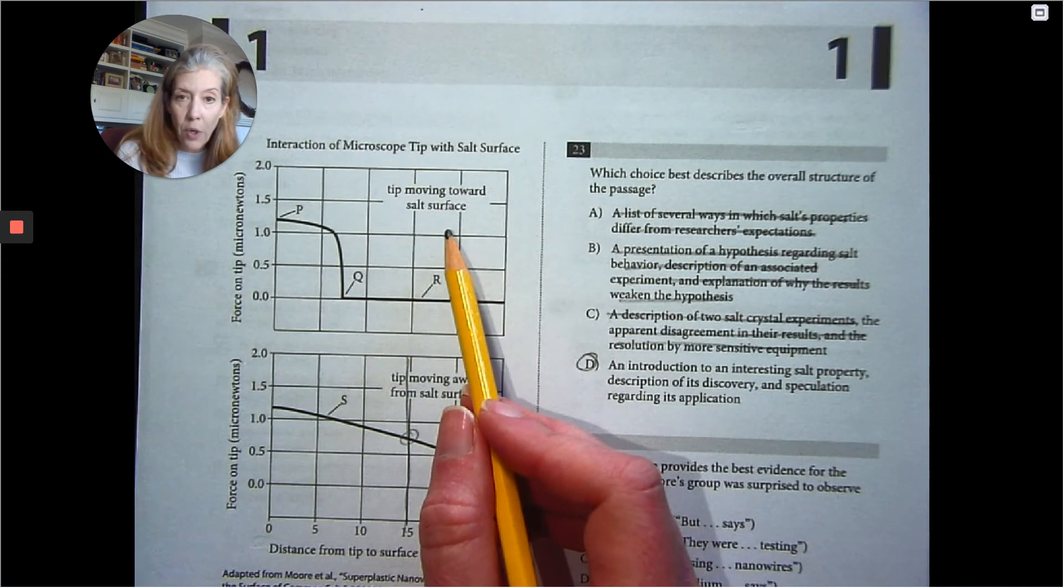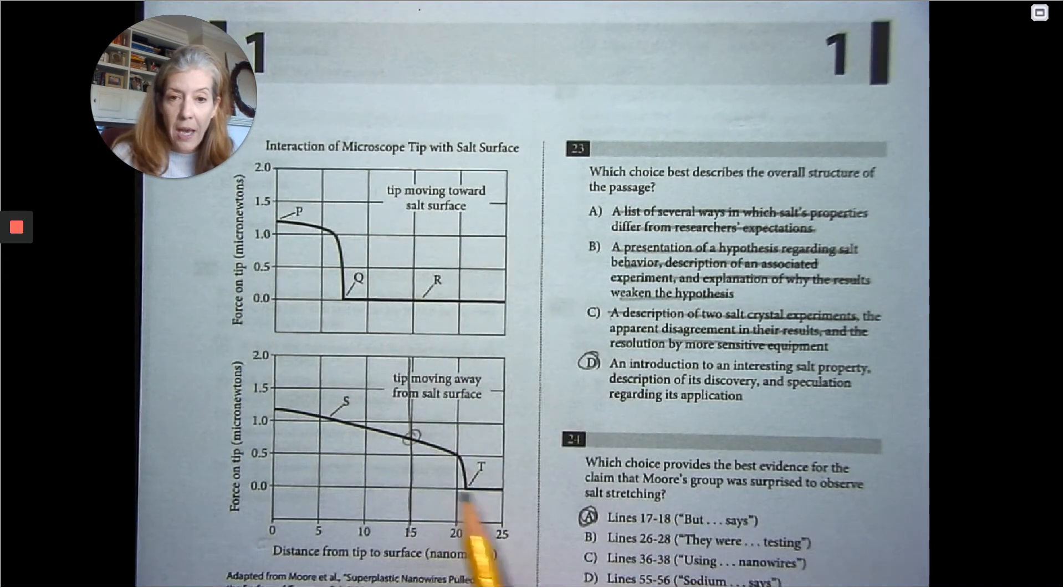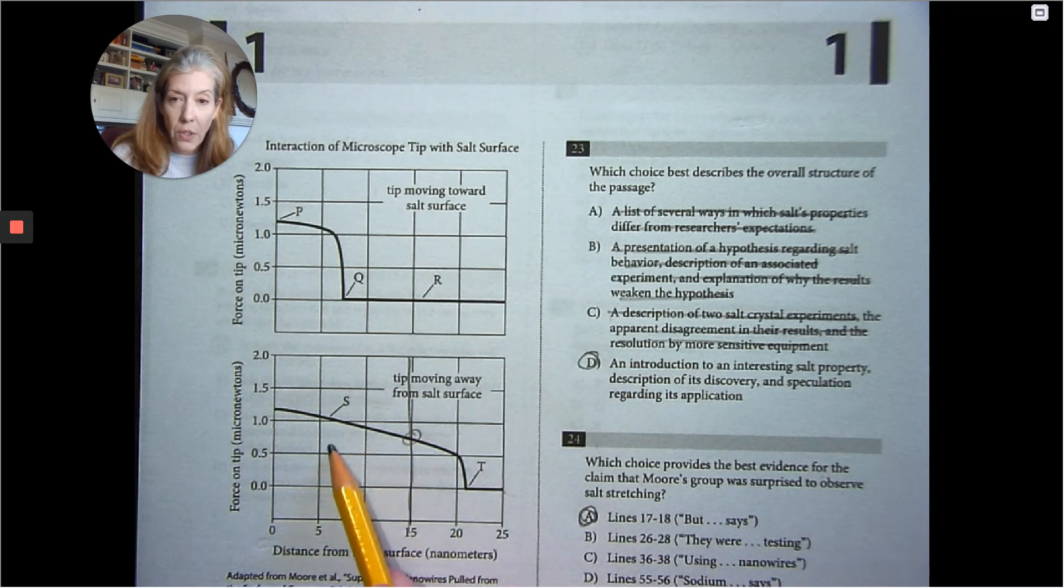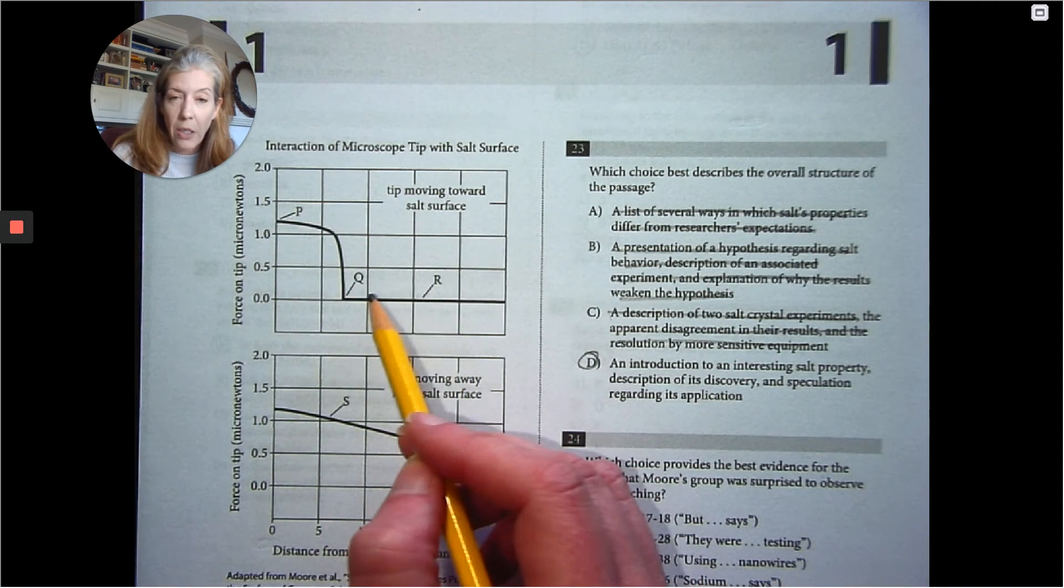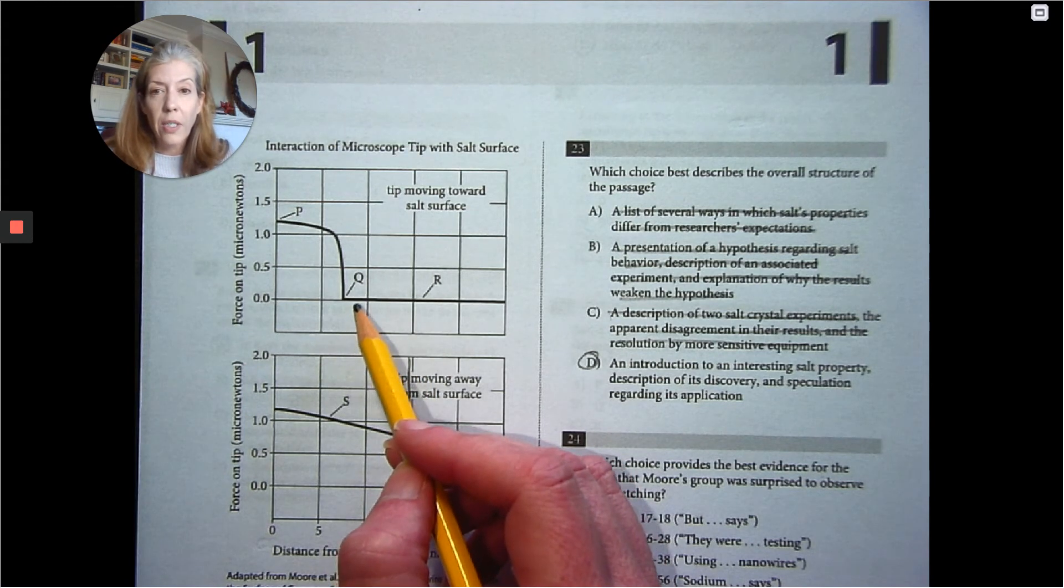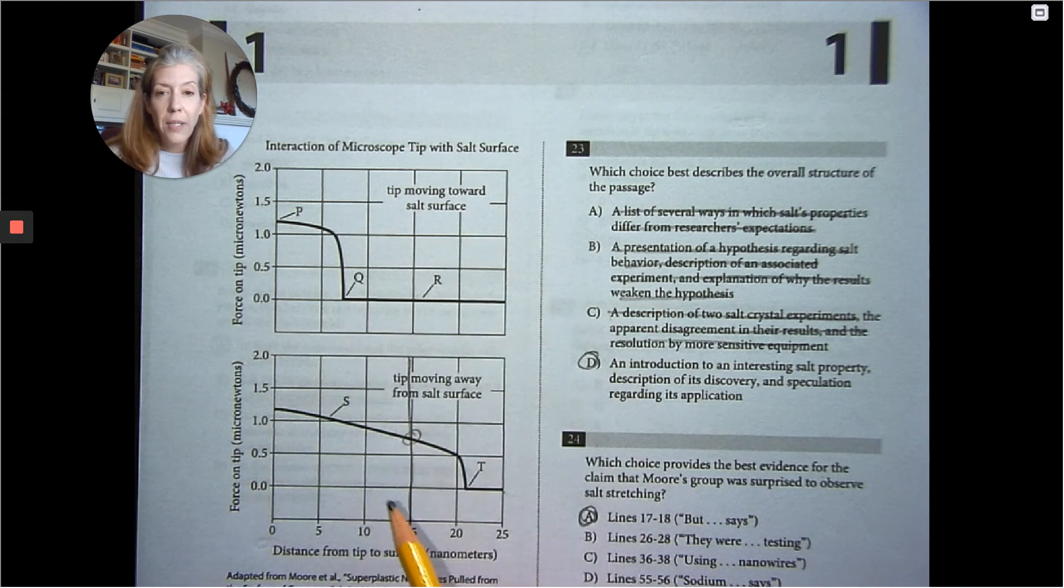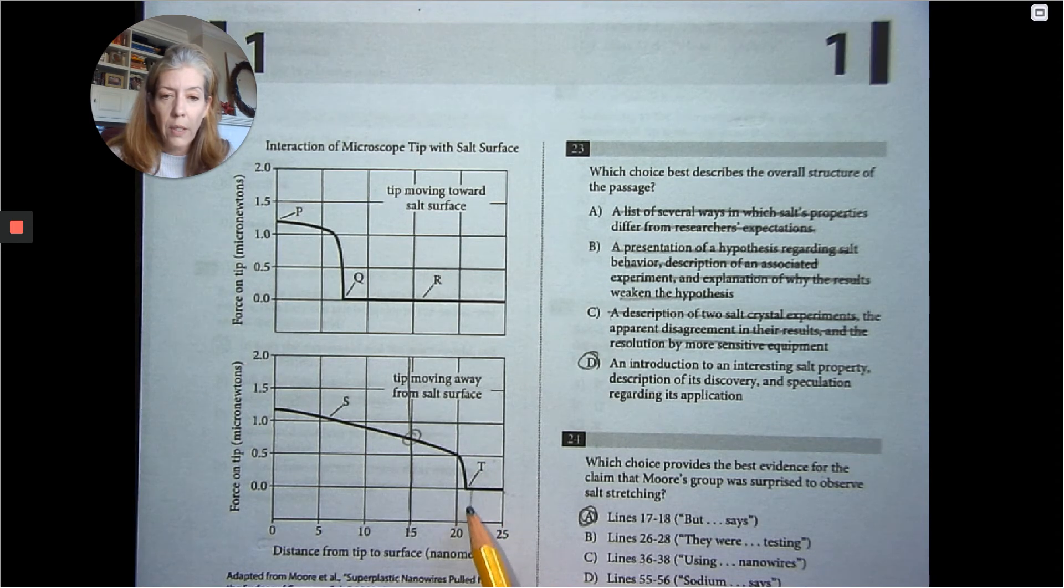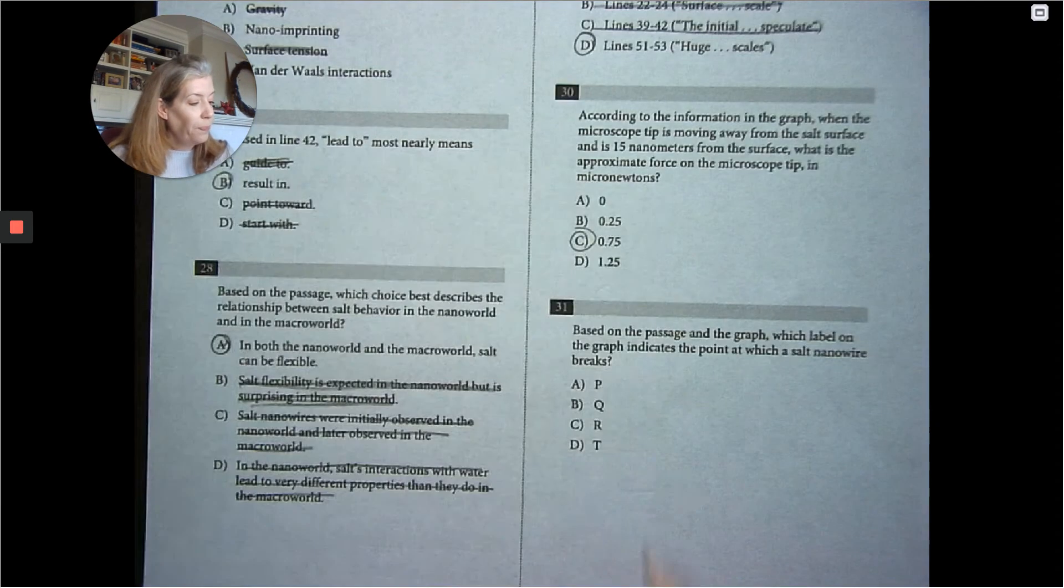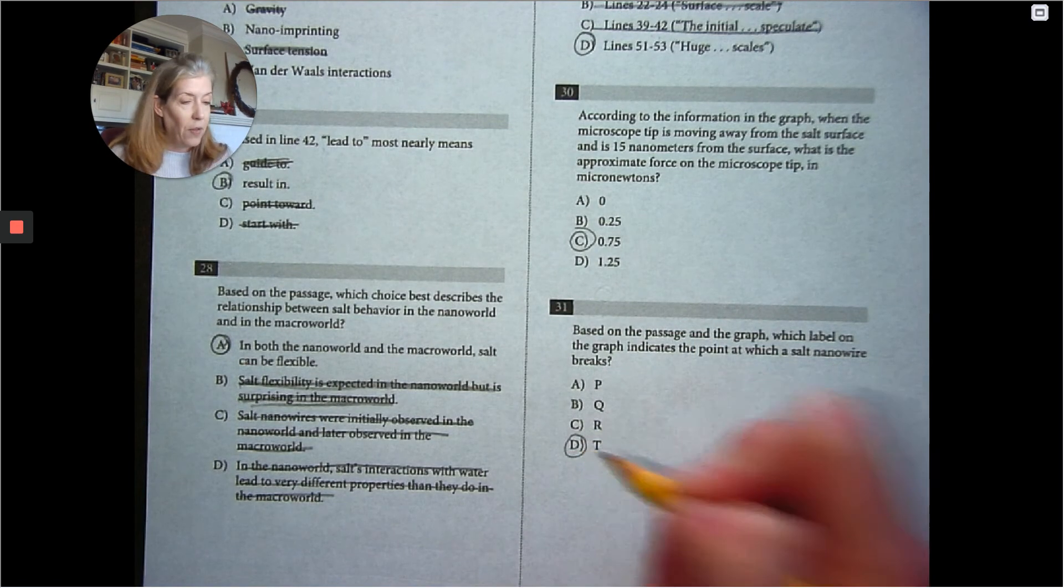It's going to break the farther away it is. So we're not moving toward the salt surface. We're moving away. And the farther away it is, it's going to break. The closer it is to it, the stronger the connection. So we can assume that up here, as we're moving toward the salt surface, the connection is getting stronger. As we're moving away, the connection is going to break. The farthest away, distance from the tip to the surface is 20, looks about 21, which is T. 21, 22. Right around there. 21, 22, which is T. T. So the answer is T.